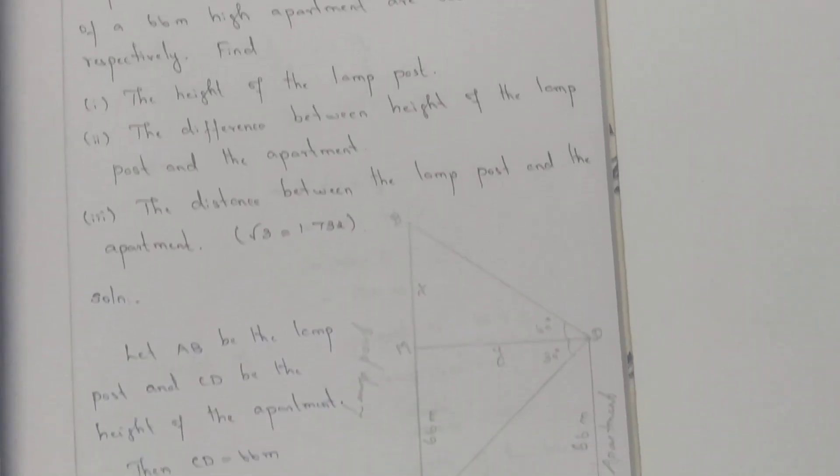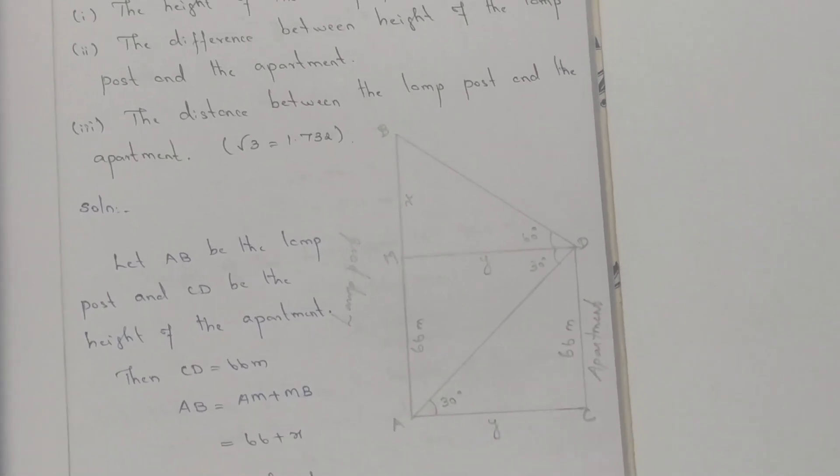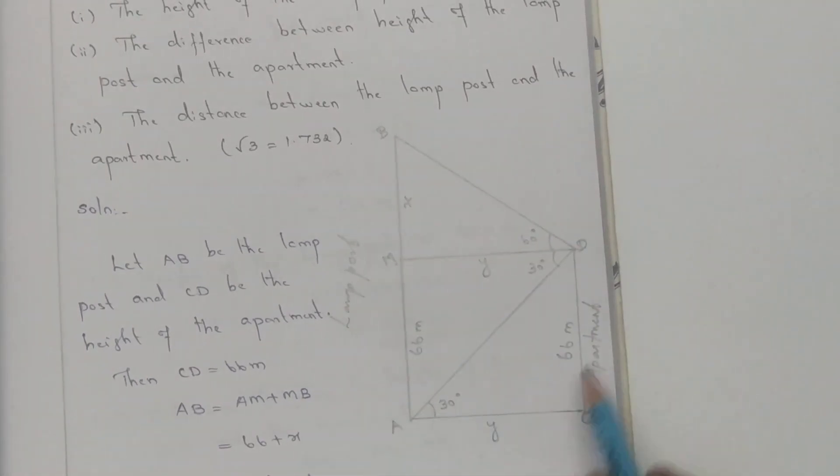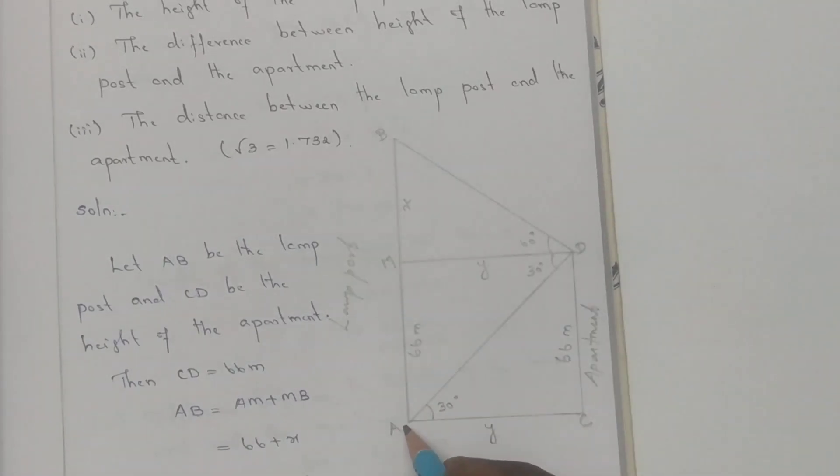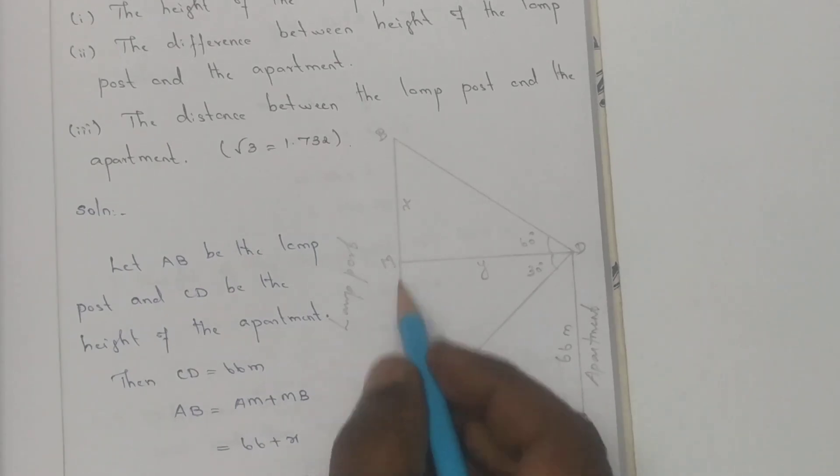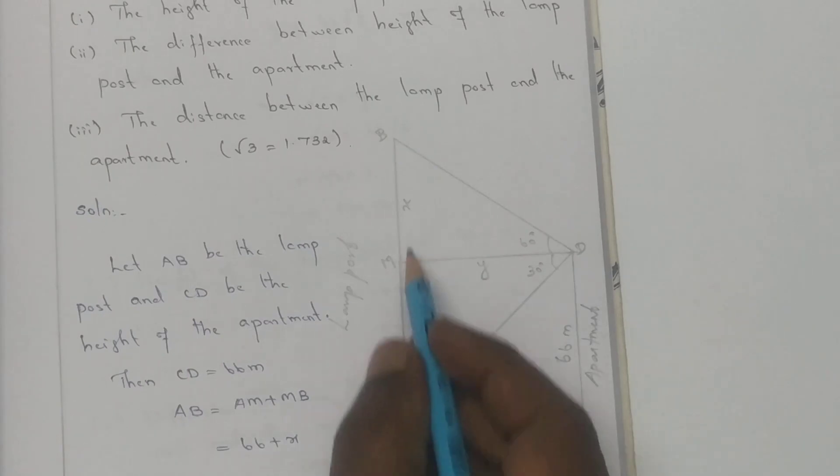So in this question, AB is the lamp post and CD is the apartment. First, we need to find the height of the lamp post. The apartment height is 66 meters. Let X be the additional height above the apartment level, so the height of the lamp post is 66 plus X.